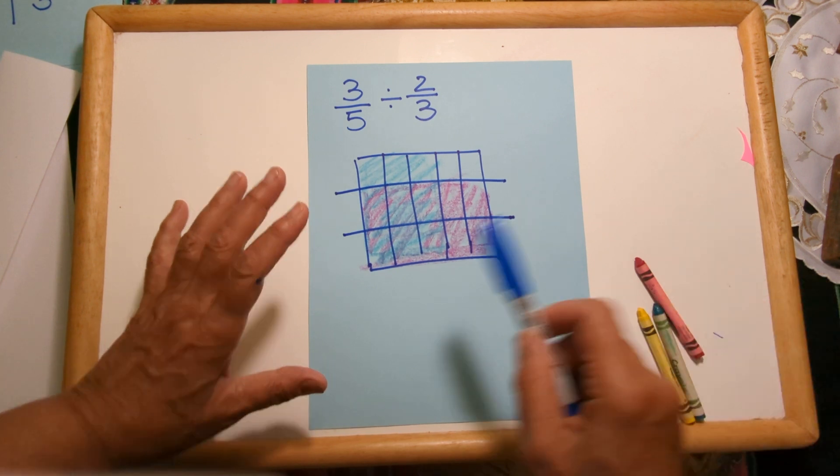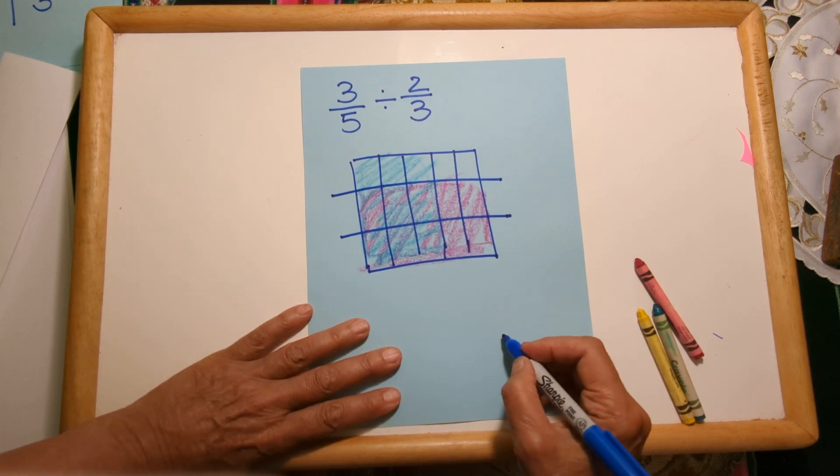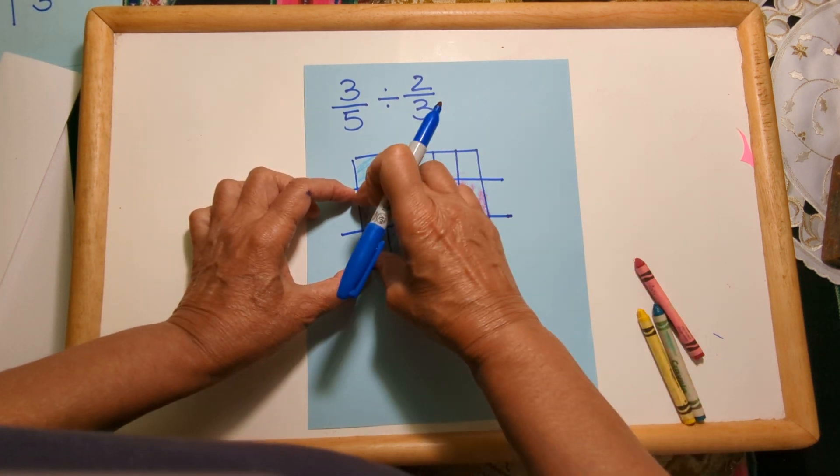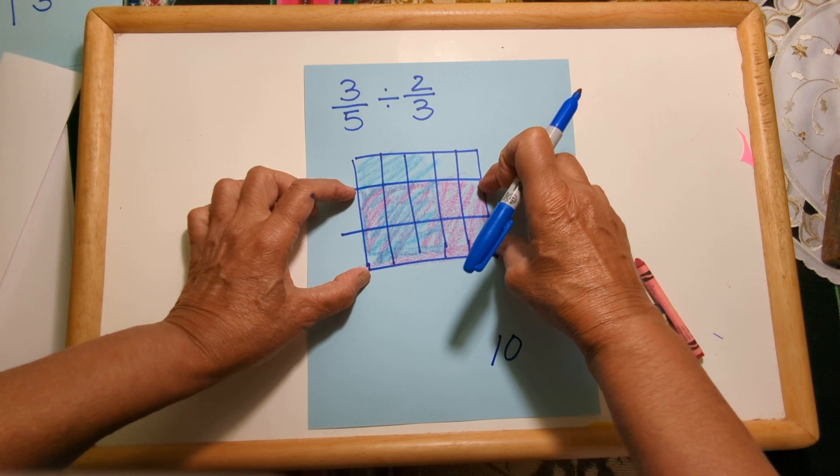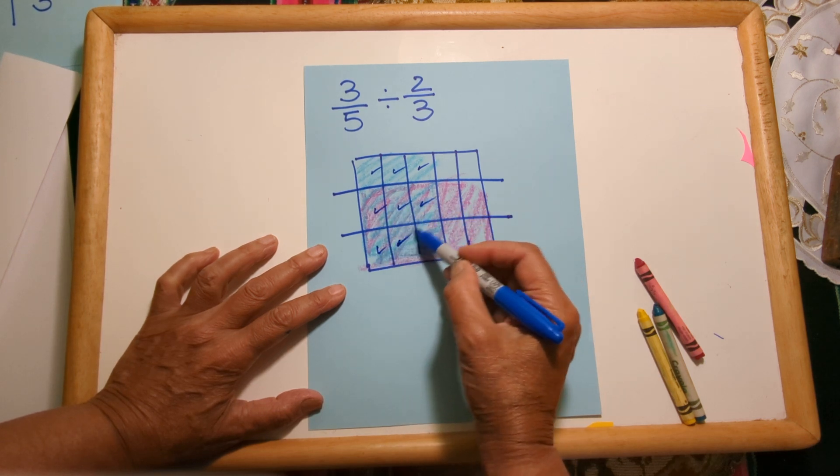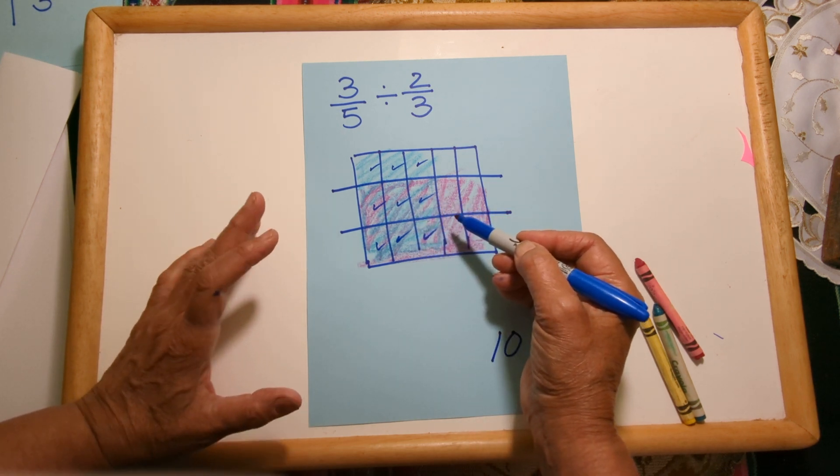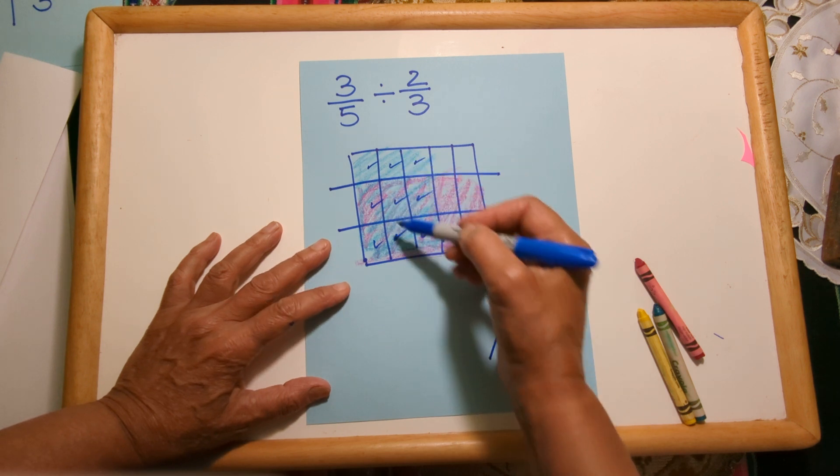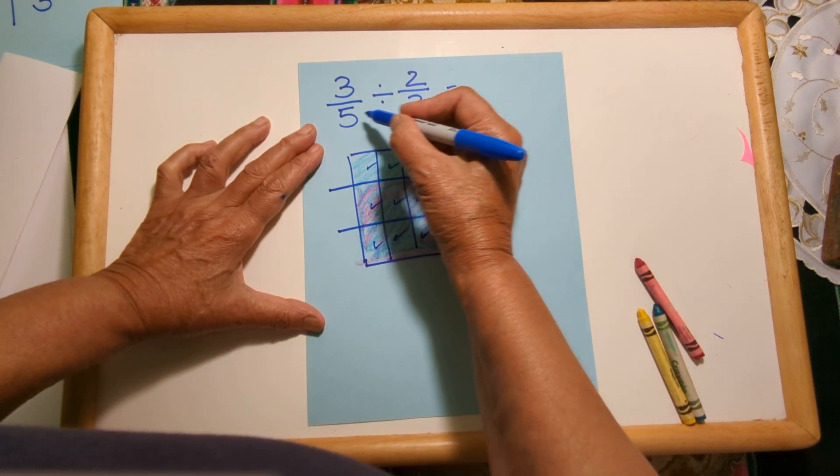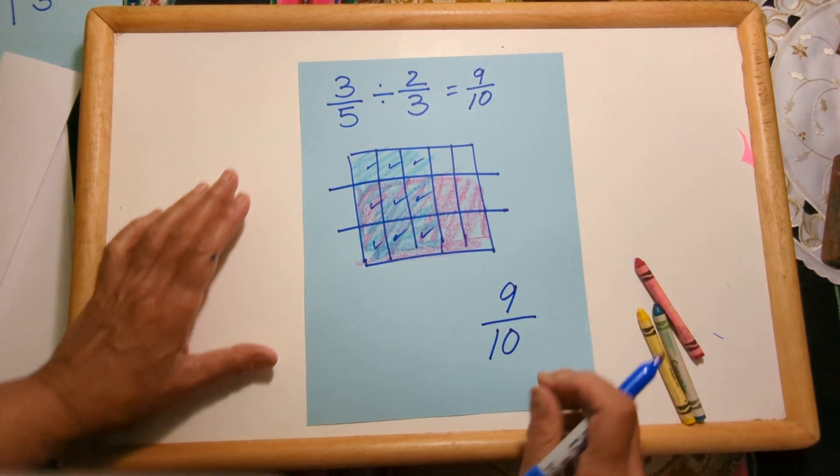The two-thirds is made up of one, two, three, four, five, six, seven, eight, nine, ten of these units. So how many groups of ten of these units will fit into three-fifths? Let's see—one, two, three, four, five, six, seven, eight, nine—and it's not even a full ten, it's only nine of the ten. So 3/5 divided by 2/3 equals 9/10.